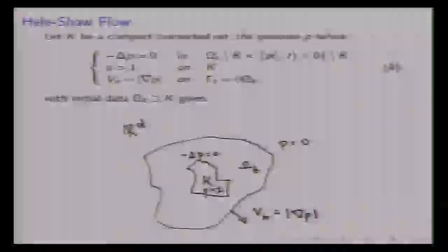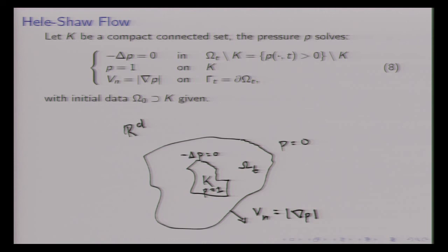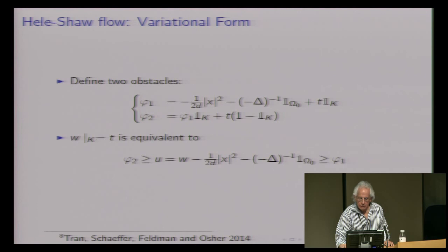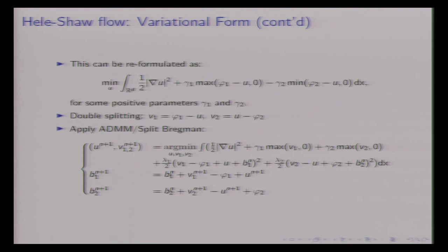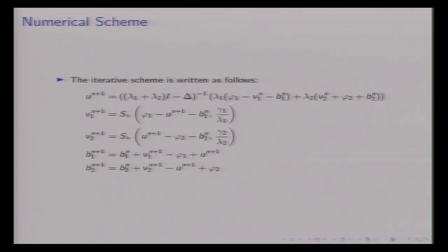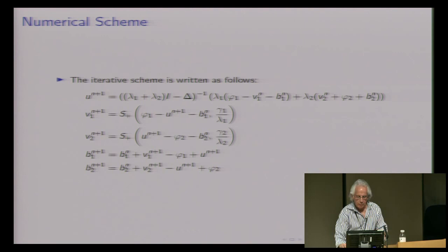For Hele-Shaw flow, you solve: Laplacian p = 0 in a moving region, p positive there, 1 on the boundary. The normal velocity is known on gamma_t — the moving boundary. By the time you reduce it to a simpler problem, that Hele-Shaw problem can be solved again by shrink and inverse Laplacian. Same looking thing: Laplacian inverse, shrink operator, add back the error, and you're in business.